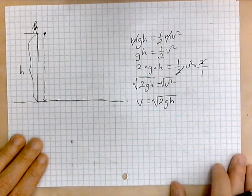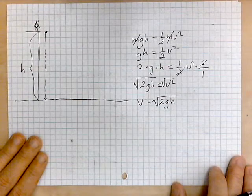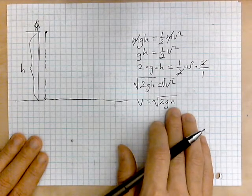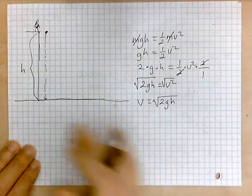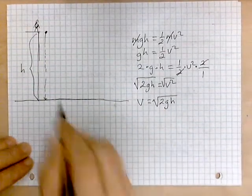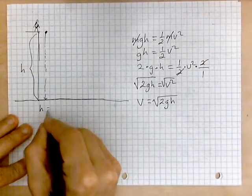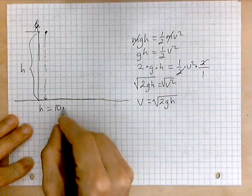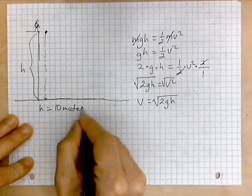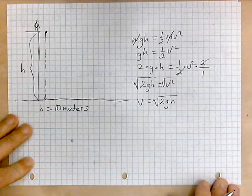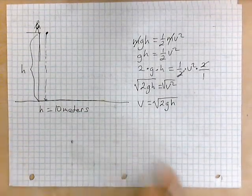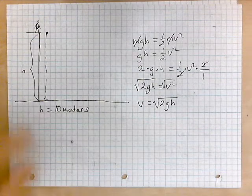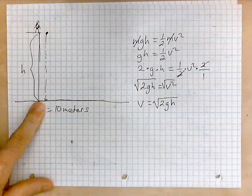So this is a general expression and the rest of it is used as follows. You are given the H and then you just plug into this. So for example to make more concrete if you're given an H of 10 meters or a height of 10 meters,